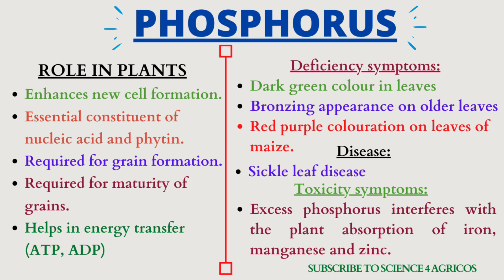Deficiency symptoms of phosphorus: usually dark green colour in leaves is noticed, bronzing appearance on older leaves, and red-purple discolouration on leaves of maize. The disorder is sickle leaf disease. Toxicity symptom: excess of phosphorus interferes with the plant's absorption of iron, manganese, and zinc.